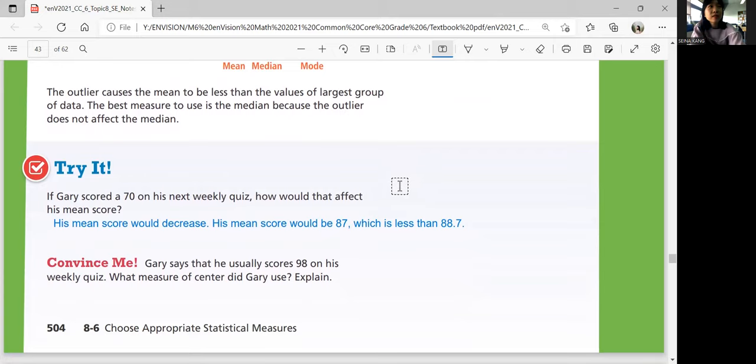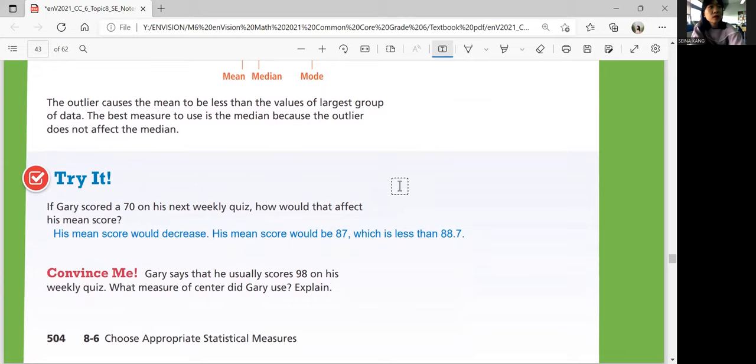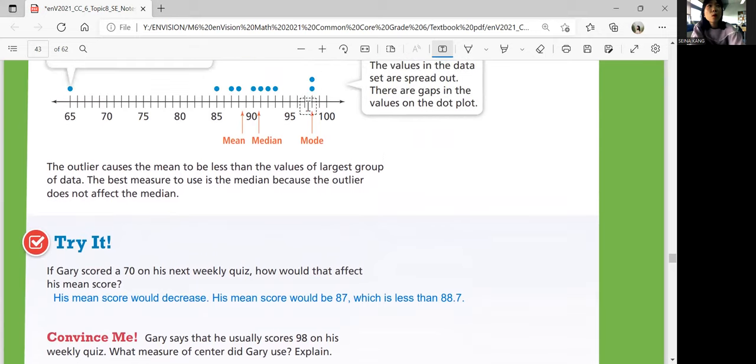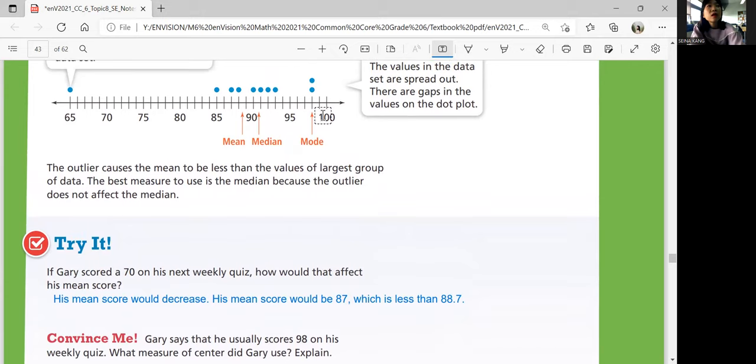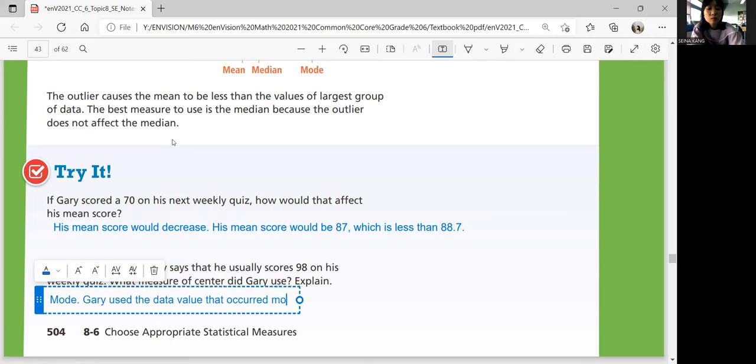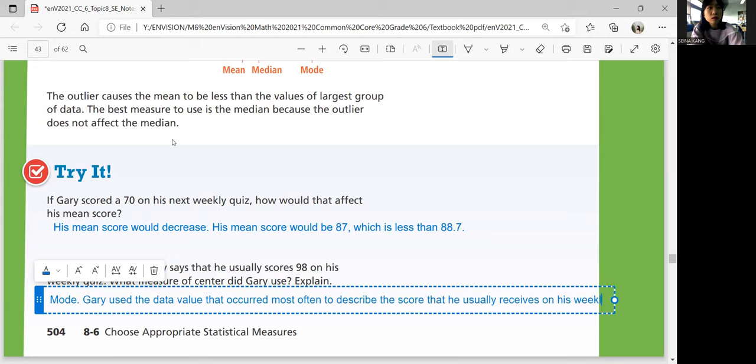Convince me. Gary says that he usually scores 98 on his weekly quiz. What measure of center did Gary use? Explain. So if he says I usually score 98, which one is he using? 98 is right here. He used the mode. So if he scored 98 for two quizzes and that's his mode, then that's where he came from. Gary used the data value that occurred most often to describe the score that he usually receives. But his average is way lower than that.